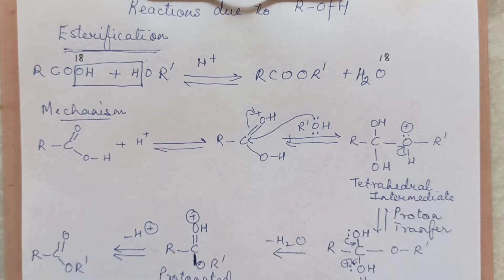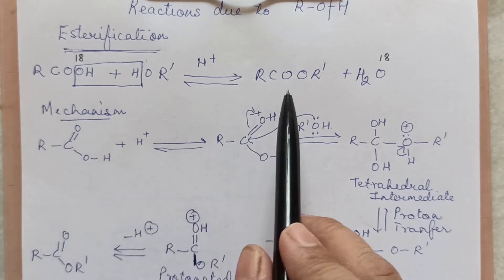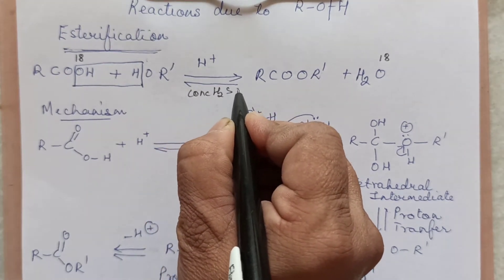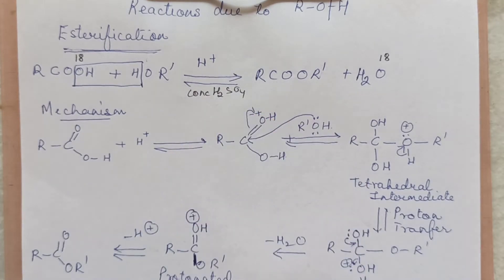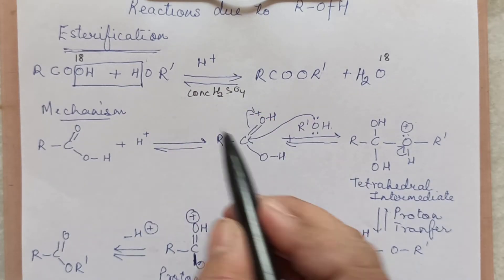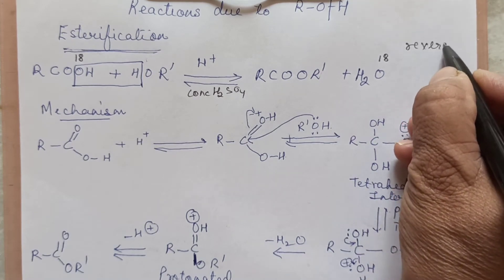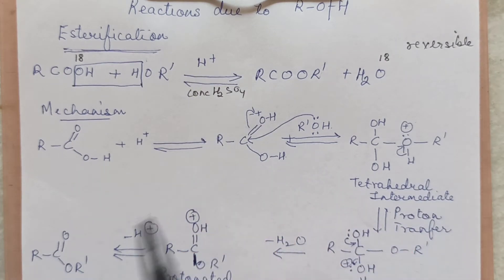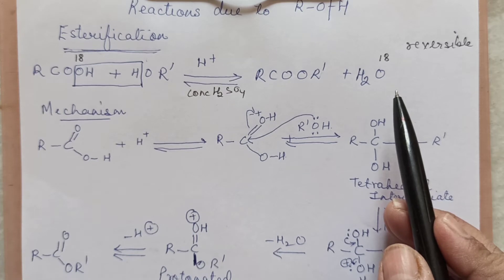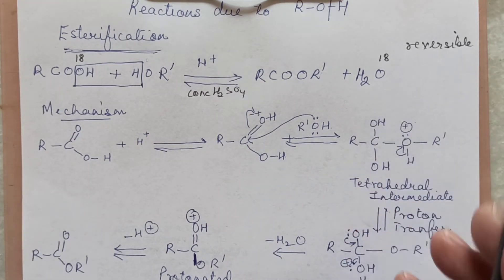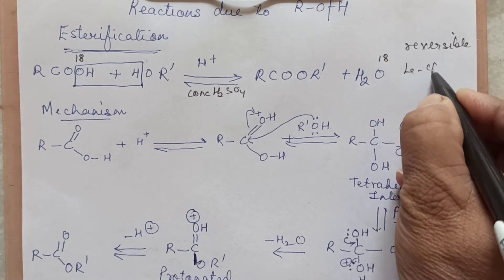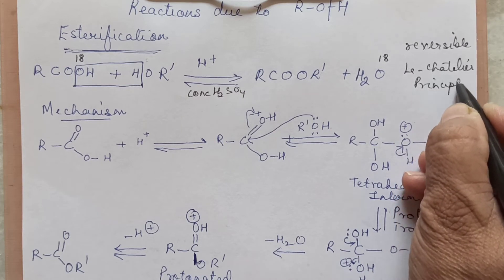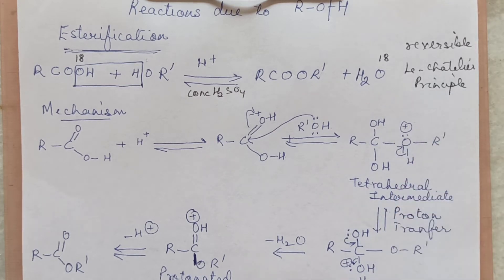It is very important to know that the O-H bond of alcohol breaks, not of the acid. A reason-type question can be asked: why is this reaction carried out in the presence of concentrated sulfuric acid? Because this reaction is reversible. Sulfuric acid is a good dehydrating agent — it removes water, one of the products. As per Le Chatelier's principle, the equilibrium shifts in the forward direction.